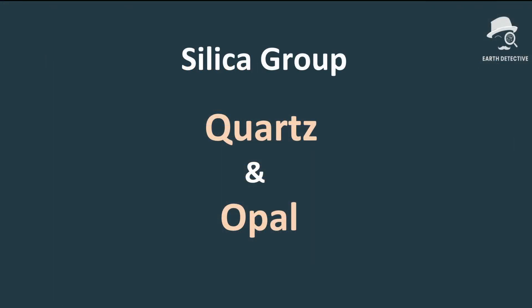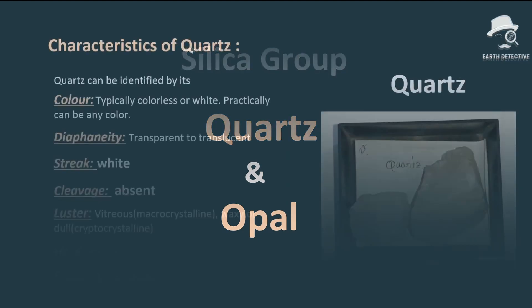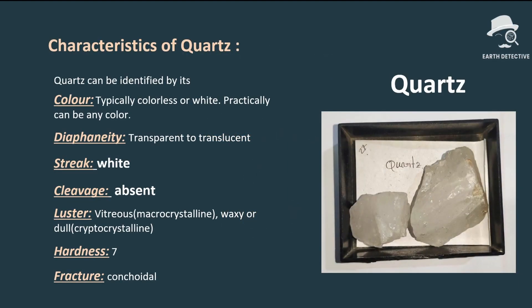The silica group includes both quartz and opal. First, let's study quartz in detail. Quartz can be identified by its colorless or white appearance — practically it can be any color. Its diaphaneity is transparent to translucent. Diaphaneity means degree of transparency. Streak means the color of a mineral when it is powdered. Its streak is white.